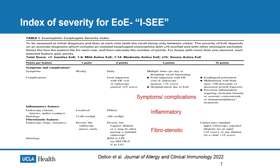The EREFS score only looks at endoscopic features. The more recent IC score takes into account symptoms and complications, endoscopic features, and histologic features. In terms of symptoms, it captures frequency of dysphagia; complications include food impactions, hospitalizations, failure to thrive, and esophageal perforation. The inflammatory component is assessed endoscopically via edema, furrows, or exudates, and histologically by eosinophil counts. The fibrous stenotic component evaluates rings, strictures, lamina propria fibrosis, and basal cell hyperplasia. This allows us to classify patients as having inactive, mild, moderate, or severe EOE.